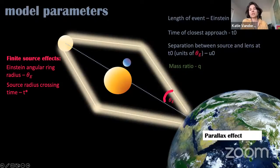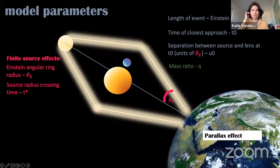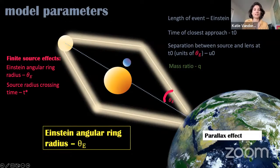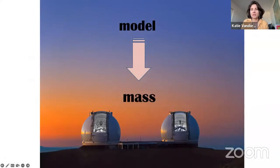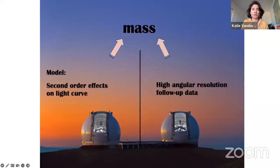The microlensing model does not directly give you the mass of the individual components that make up the system — it gives you a bunch of other parameters. Some models also have a microlensing parallax effect, either from the orbital motion of the Earth or using simultaneous observations from a space telescope. If you're not a microlenser, just remember what the Einstein angular ring radius is — that's all you really need to take away.